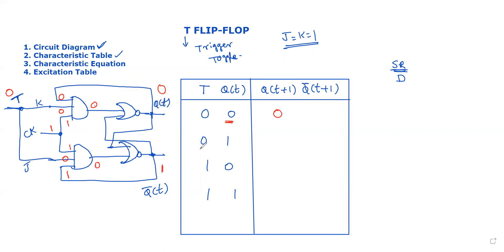If T is 0 and Q(t) is 0, the output is 0 — complemented form remains 0. Next, for T equals 0 and Q(t) equals 1, the output is 1. So for T equal to 0, the output Q(t+1) equals Q(t) — no change.